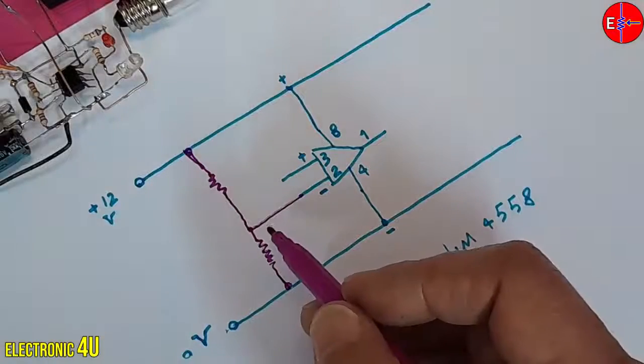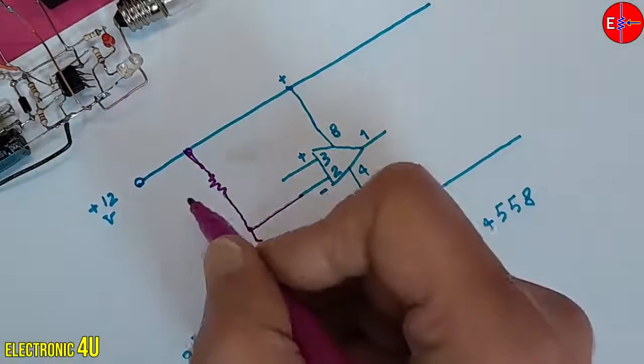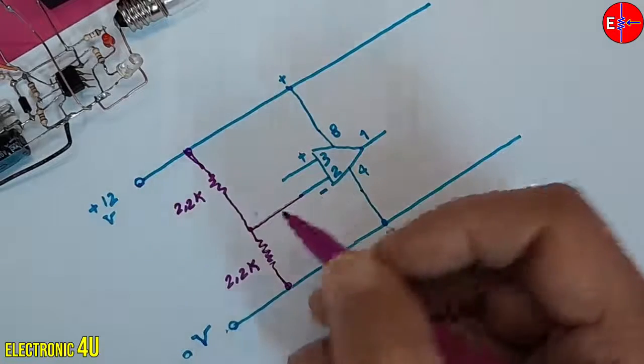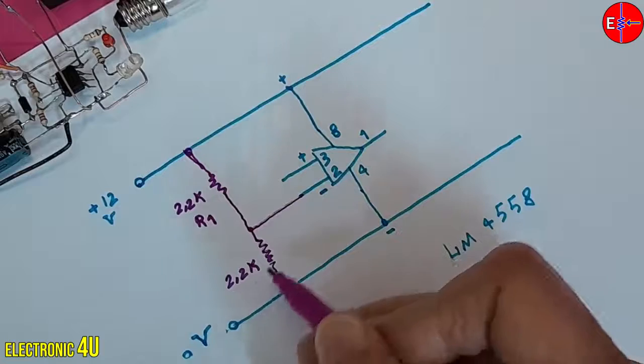In this circuit, I use two resistors of 2.2 kilo ohms, naming the higher one R1 and the lower one R2.